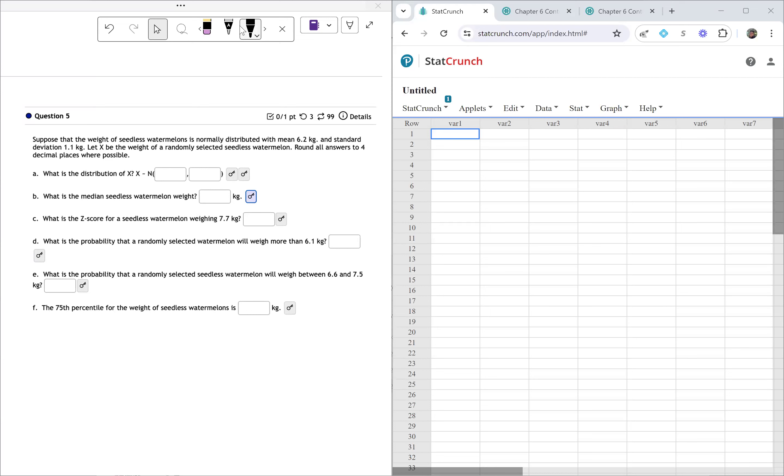Part A says, what is the distribution of x? Just like the last example, when we have this x squiggle n, we need our mean in the first part and then we need our standard deviation in the second part. We are going to have 6.2 comma 1.1. So we have 6.2 kilograms as the mean and a standard deviation of 1.1 kilograms.